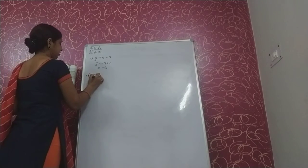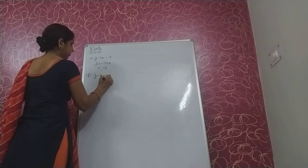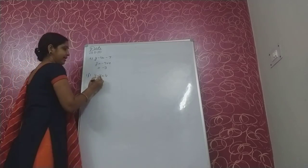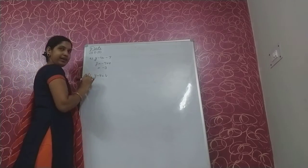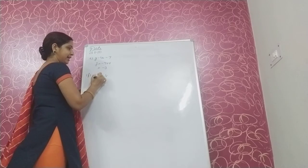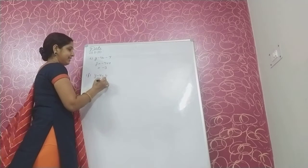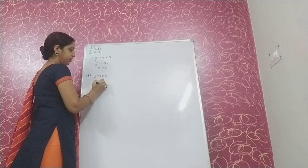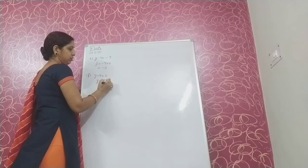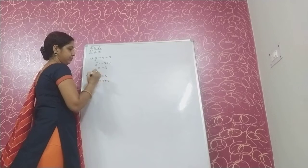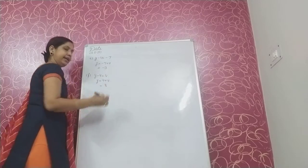Next, y minus 4 is equal to 4. Here we have minus 4 with y. When we transpose minus 4 to the right side it becomes plus 4. So 4 plus 4 is 8.